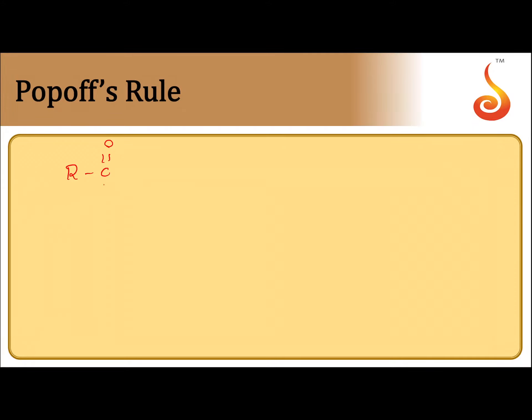If I take R-C=O (an aldehyde), on oxidation you will get a carboxylic acid having the same number of carbon atoms. Why do we get carboxylic acids having the same number of carbon atoms?